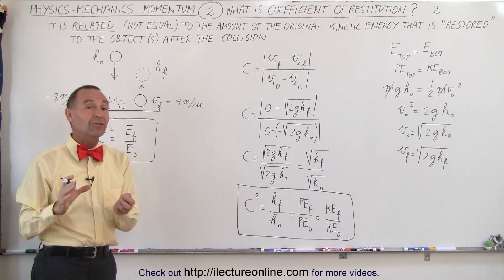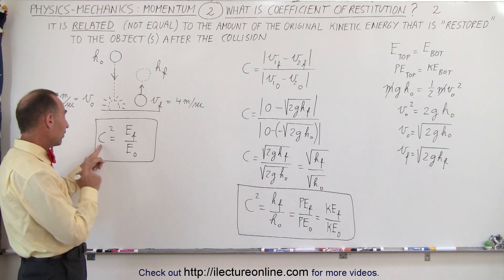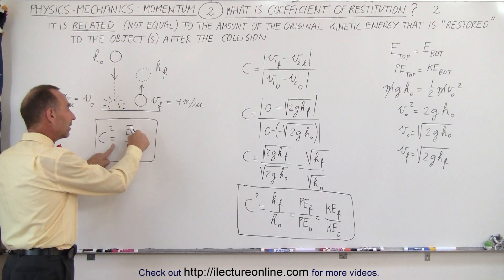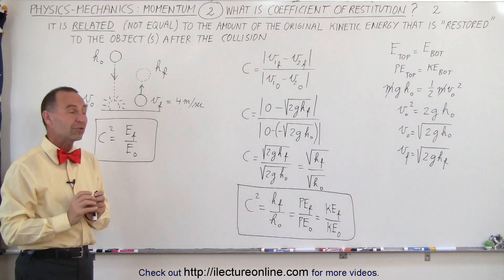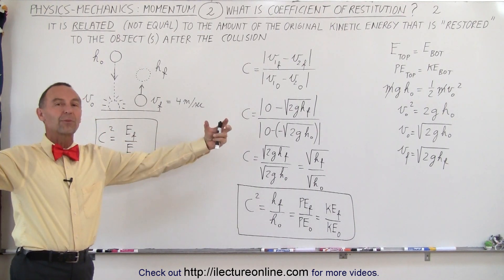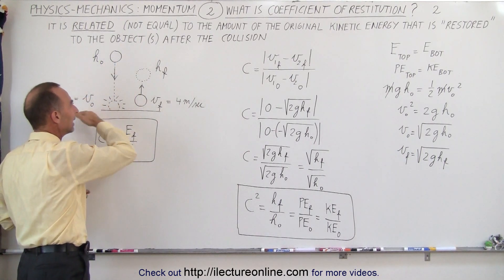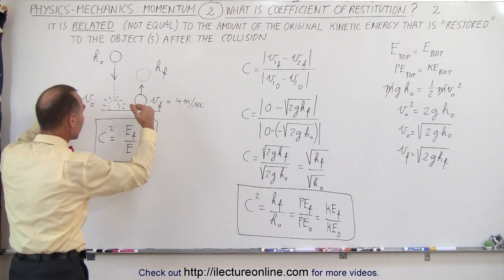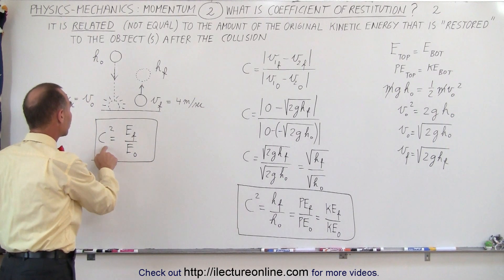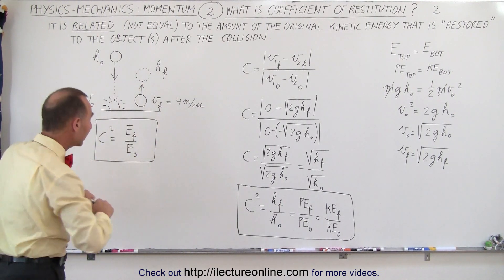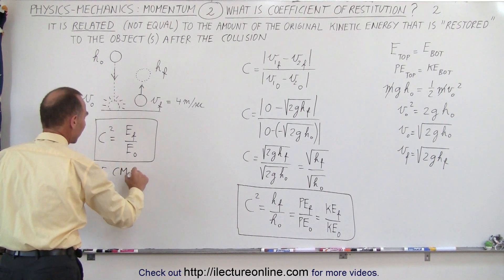That's a really significant result for understanding the coefficient of restitution. However, we have to be careful: c squared equals the ratio of final to initial energy only in the center of mass reference frame of the objects involved in the collision. In this simple case of one object hitting the floor — which is attached to the earth — the center of mass reference is essentially the earth's, so the equation applies directly. But when two objects approach and bounce off one another, we must track the center of mass carefully.